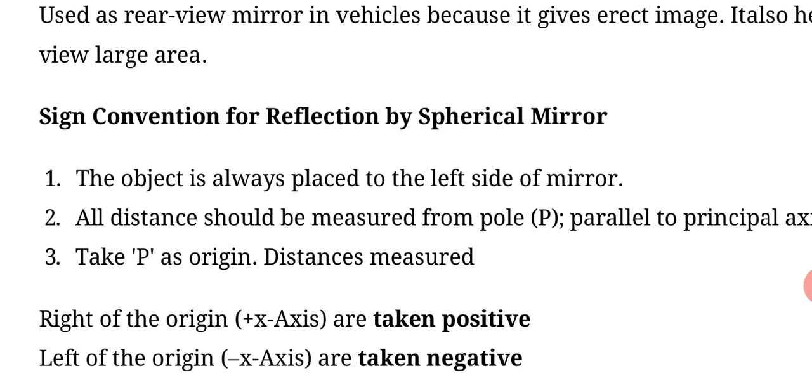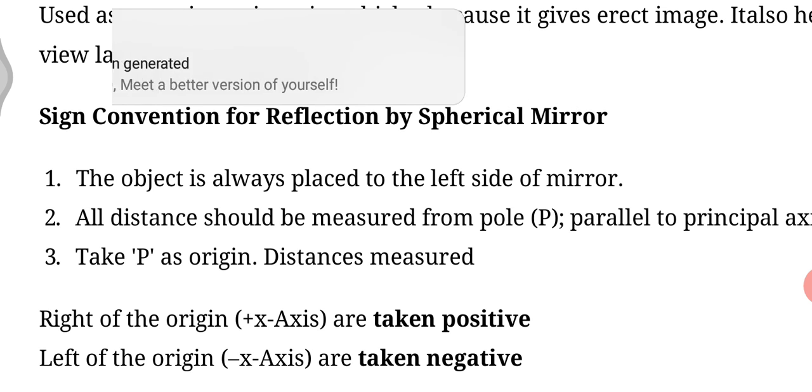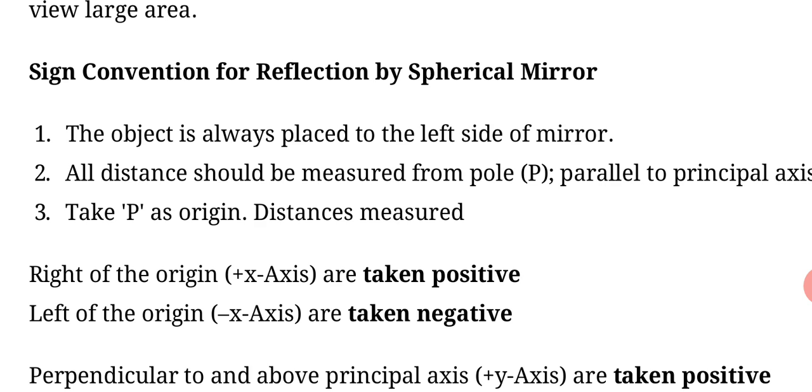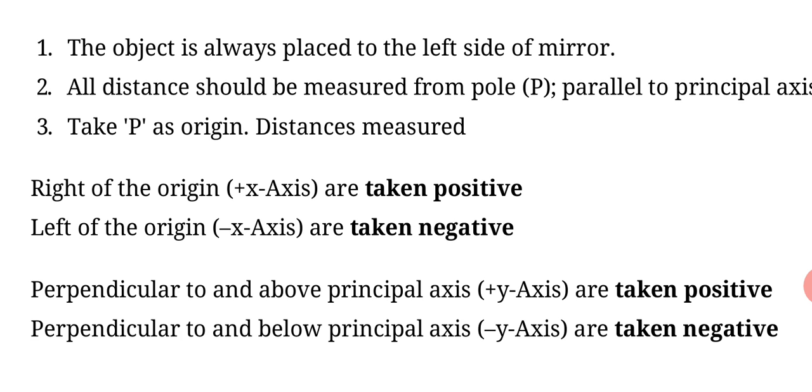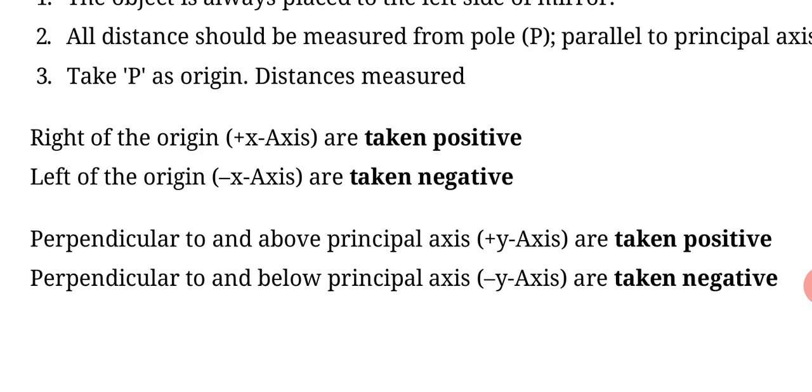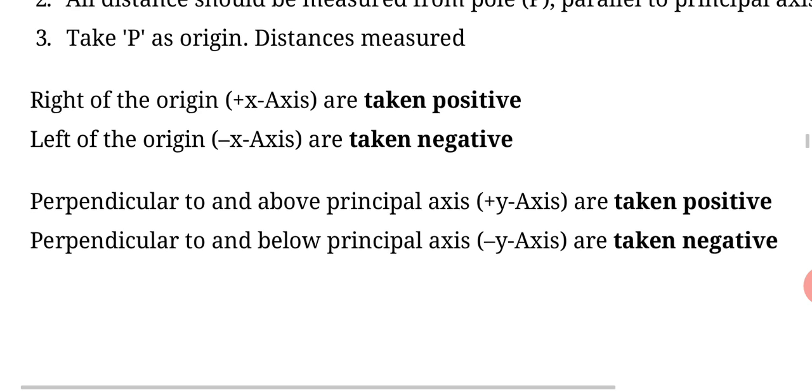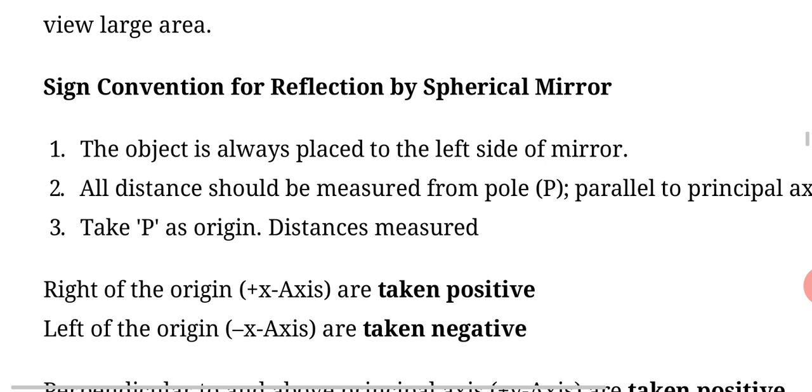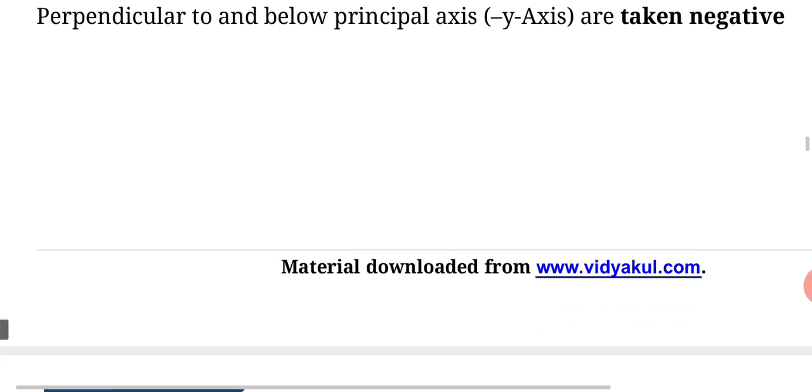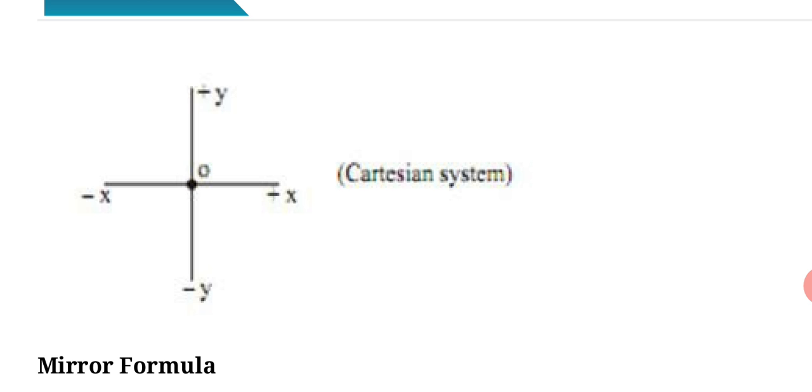Object is always placed to the left side of mirror. All distances should be measured from pole, parallel to principal axis. Take P as origin. Right side of origin x-axis is positive, left side negative. Perpendicular to principal axis, above is positive, below is negative y-axis. So these are sign conventions of reflection.